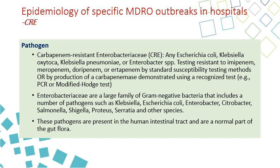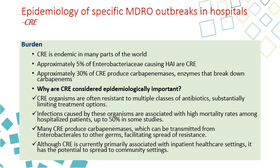Enterobacteriaceae are a large family of gram-negative bacteria including Klebsiella, E. coli, Enterobacter, Citrobacter, Salmonella, Shigella, Proteus, Serratia, and other species. These pathogens are normally present in the human intestine — that is why they are called Enterobacteriaceae — and are a normal part of the gut flora. They are endemic in many parts of the world. Approximately 5% of Enterobacteriaceae causing HAI are CRE, and approximately 30% of CRE produce carbapenemase, an enzyme that breaks down carbapenems, causing resistance to carbapenem drugs.